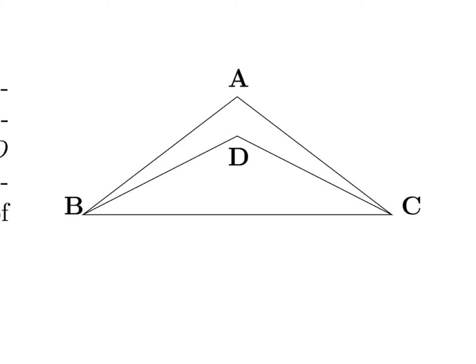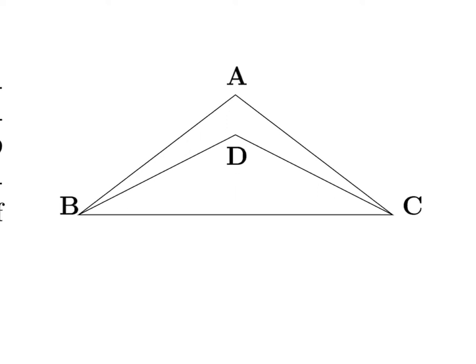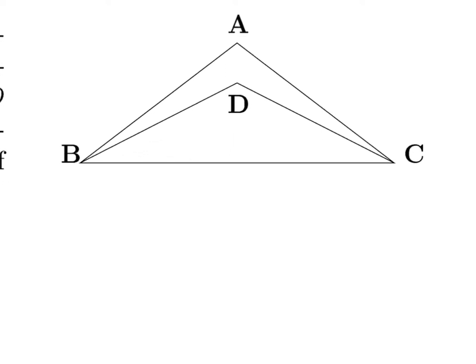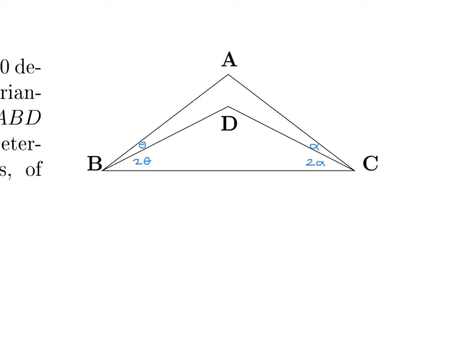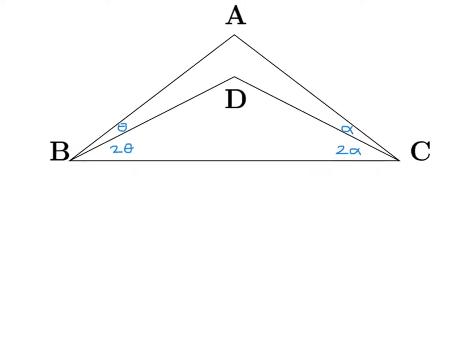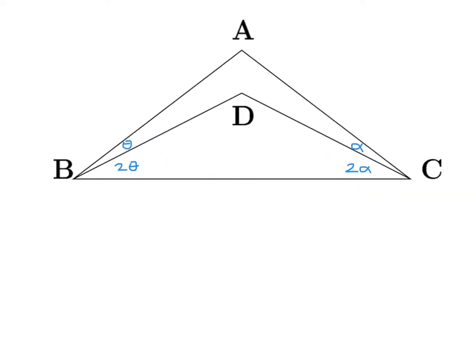Since this diagram is at the heart of the question, let's focus on it. Based on what the question told me, I can label this theta, this 2 theta, I can label this alpha, and this is 2 alpha. And they told me it's 120 degrees for angle A. So I've really just used the question stem to label the diagram.